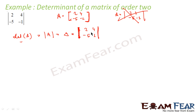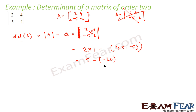To find the value, multiply the diagonals then subtract the remaining parts. So for the matrix with elements 2, 4, −5, −1 it is 2×(−1) minus 4×(−5). That gives minus 2 minus (−20), which is minus 2 plus 20.